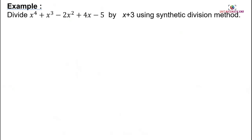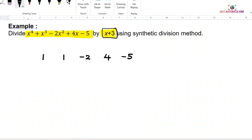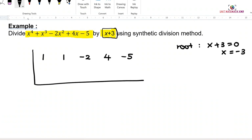Let's try the next example. We want to divide X⁴ plus X³ minus 2X² plus 4X minus 5 by X plus 3 using the synthetic division method. We are given a linear factor divisor and the coefficient of X is 1. We write the coefficients in descending power: for X⁴ the coefficient is 1, for X³ it is 1, for X² it is negative 2, then 4 and negative 5. Find roots: X plus 3 equals 0 gives X equals negative 3. Write negative 3 as the root.